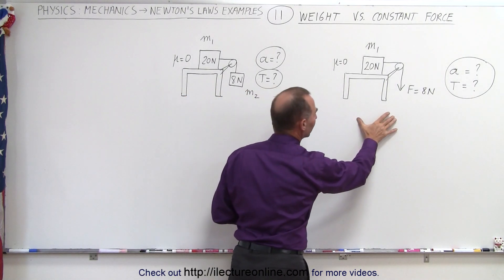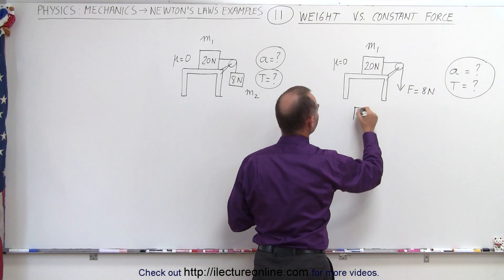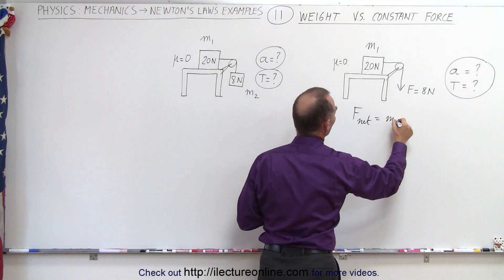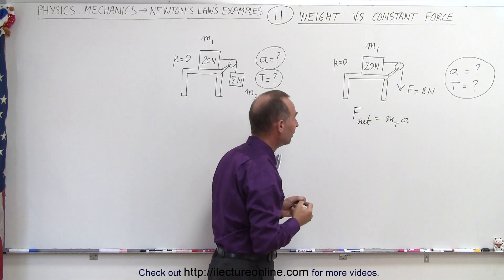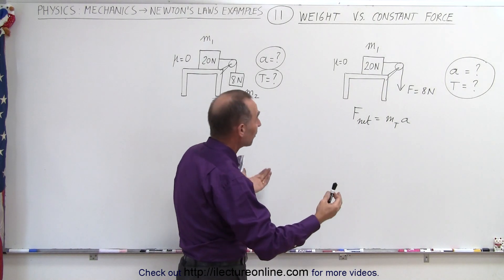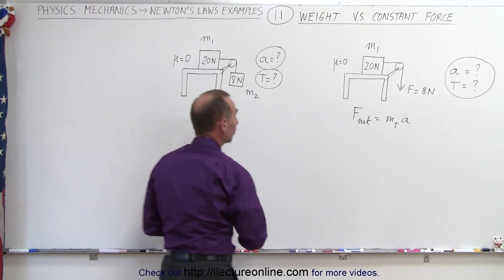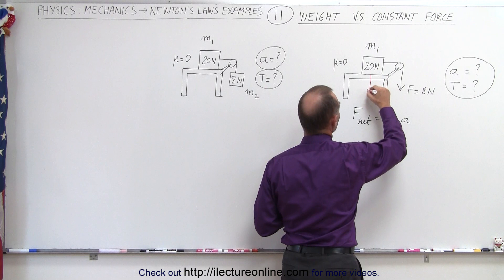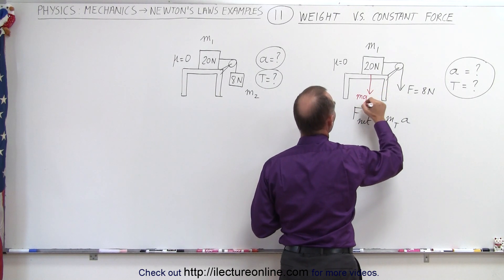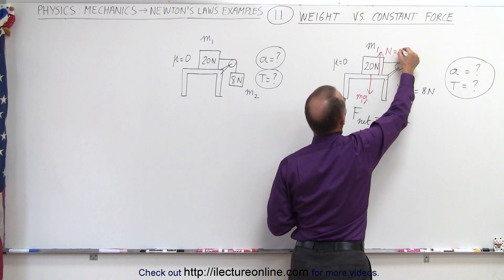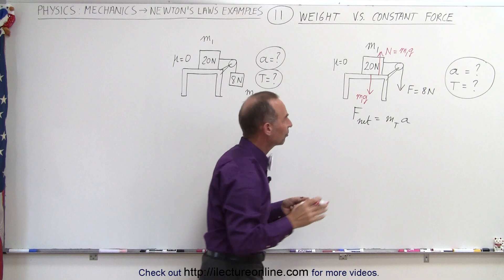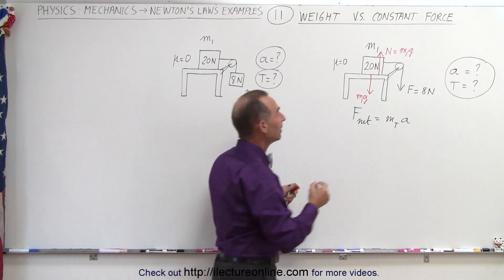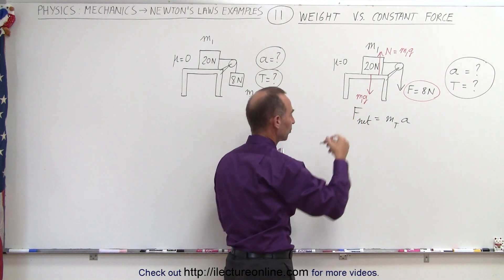Let's start with the right side. F_net is equal to total mass times acceleration. In this case the total mass is just the one mass we have, since we don't have another hanging mass. Identifying all forces: we have gravity acting downward, which is M1g, and the normal force pushing back equal to M1g. Since there's no coefficient of friction, there's no friction force. So the only net force acting on the whole system is the 8 newton force pulling down.